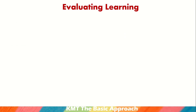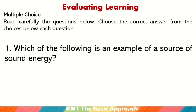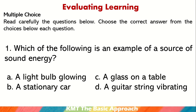Evaluating Learning — Multiple Choice. Read carefully the questions below and choose the correct answer. Number 1: Which of the following is an example of a source of sound energy? A. A light bulb glowing, B. A stationary car, C. A glass on a table, or D. A guitar string vibrating? The correct answer is letter D — a guitar string vibrating.